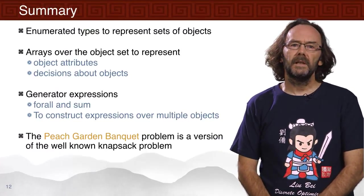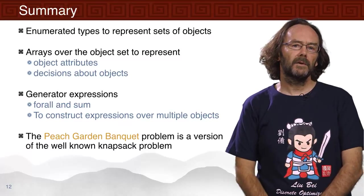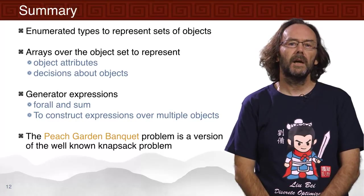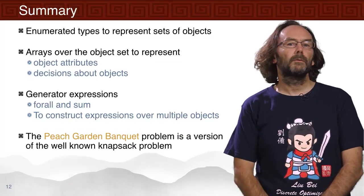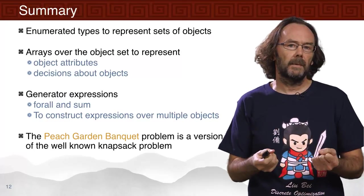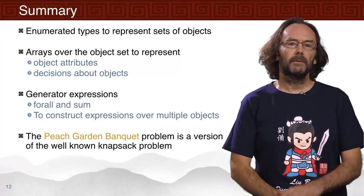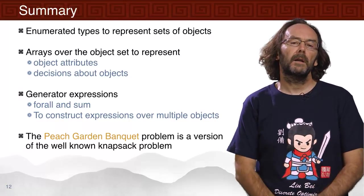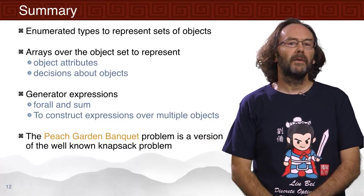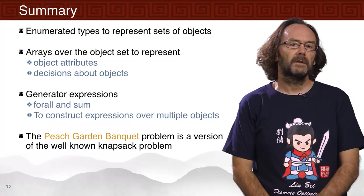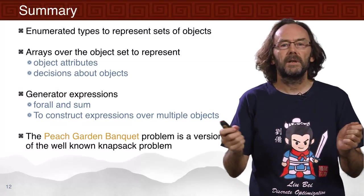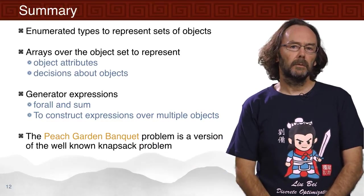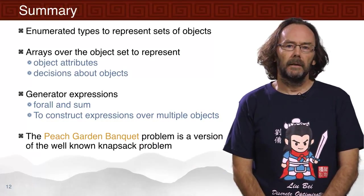In summary, we've seen enumerated types to represent sets of objects, which gave us the ability to build a data file independent of size — the size can change with the data file. We had arrays over the object to represent attributes and decisions. To work with these arrays we needed generator expressions — forall and sum — to build expressions involving an unknown number of objects, a number we don't know until we see the data file. And of course, the peach garden banquet problem is a version of the well-known knapsack problem.